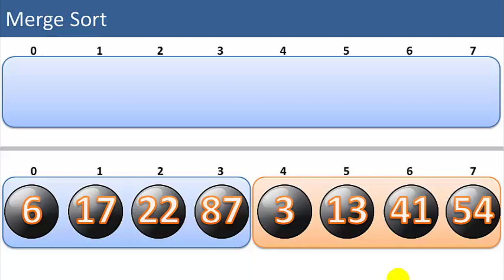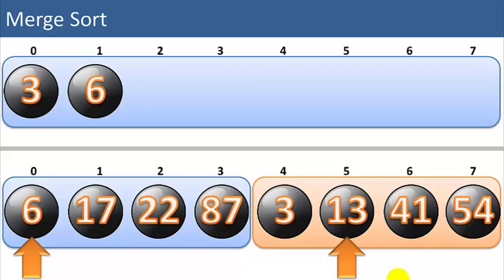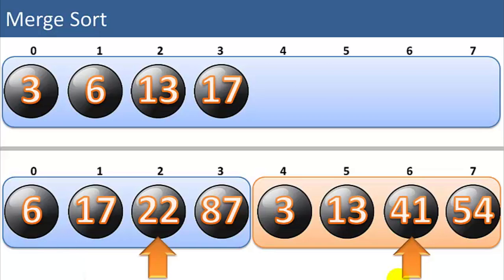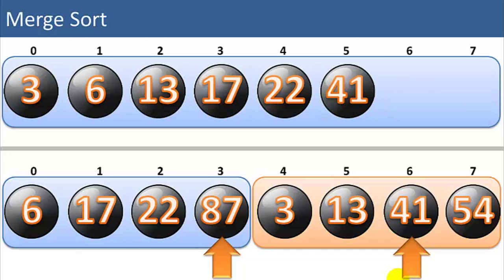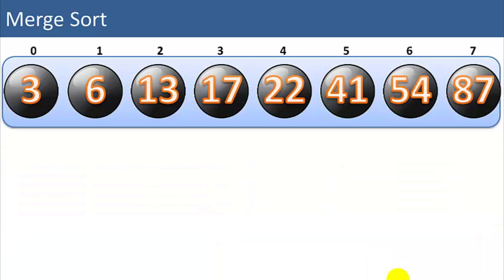We've got one more merge step to combine these into one list of eight items. We compare 6 to 3; 3 is smaller. We move the pointer and compare 6 to 13; 6 is smaller. We compare 17 to 13; 13 is smaller. We compare 17 to 41; 17 is smaller. Then 22 to 41; 22 is smaller. Then 87 to 41; 41 is smaller. Then 87 to 54; 54 is smaller. And then we move the 87 up. Now we're done — that is how merge sort works, and we have one list of eight sorted items.